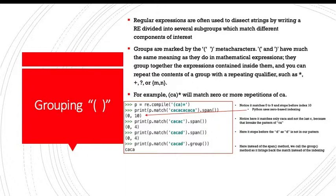For example, when we put CA inside a group with a star immediately to its right, this will match zero or more repetitions of CA. Look at the code here. Notice it matches zero to nine and stops before index 10. We'll remind you that Python uses zero-based indexing here as well. Then we see we want to match on CA, CA, C. Notice here it matches only CA, CA, not the last C because that breaks the pattern of CA star. In the third group, it stops before the D as D is not in our pattern. And in the last group, instead of the span method, we call group. So it brings back the match instead of the indexing.